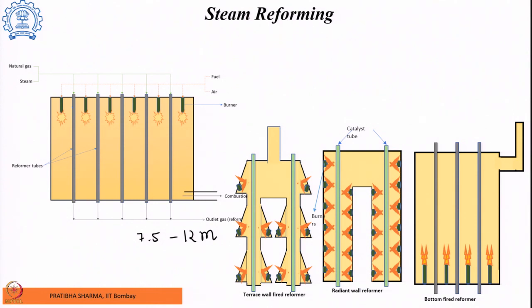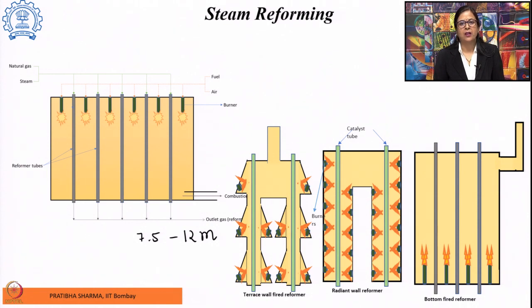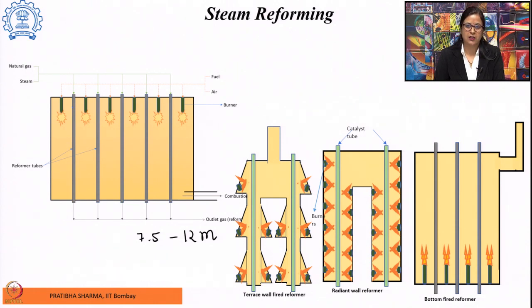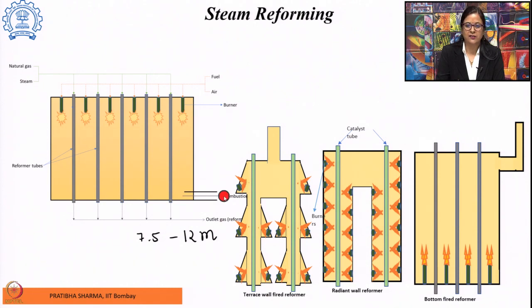These reformer tubes are externally heated with various burners. It is a box or tubular furnace wherein there are many burners which heat the catalyst-filled tubes. These burners could be arranged in various geometries: either a top-fired furnace where burners are at the top, a terrace-fired reformer where burners heat from the sides, wall-fired where burners are on the walls, or a bottom-fired reformer where burners are at the bottom.